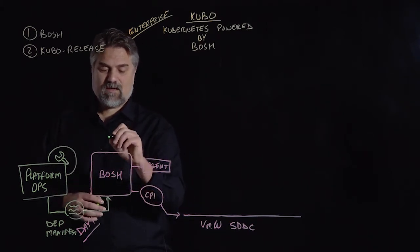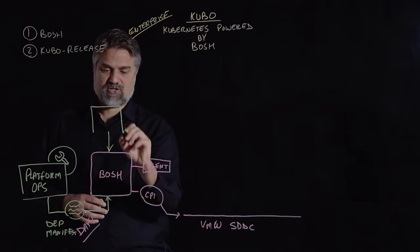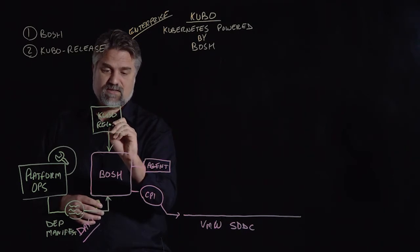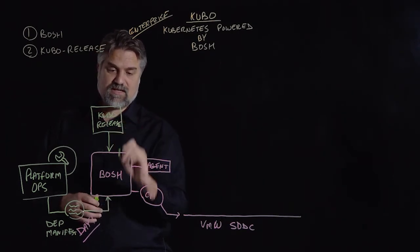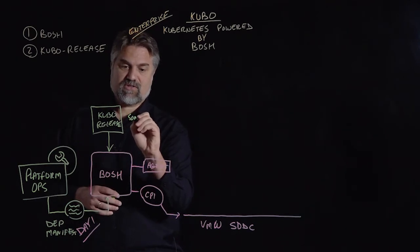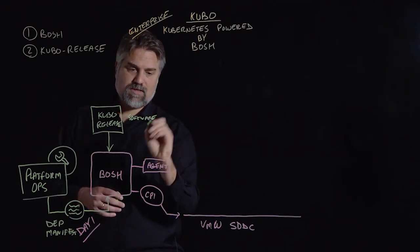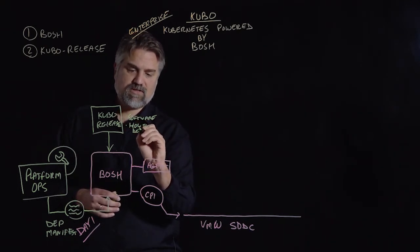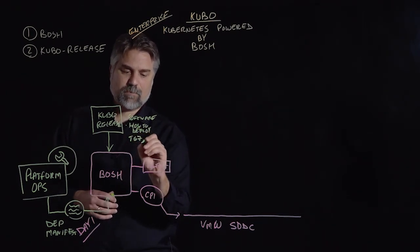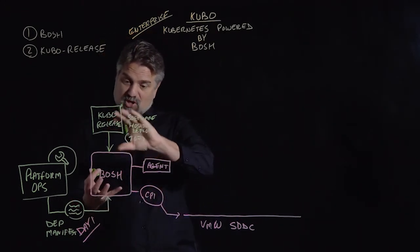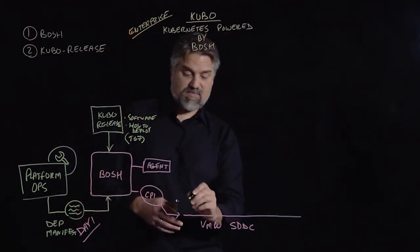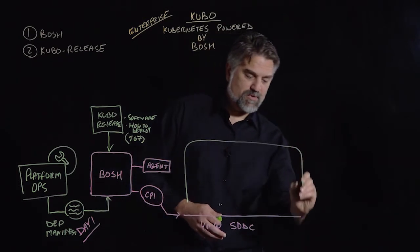This is where Kubo comes in. Kubo is actually what's known as a BOSH release. A Kubo BOSH release is going to include things like the actual Kubernetes components — the software to be deployed — and some instructions on how to deploy it. It's usually distributed in a TGZ tarball format. So when you take the BOSH release and the deployment manifest the platform operator gives to BOSH, BOSH can now, via the CPI, go ahead and create a Kubernetes cluster for us.